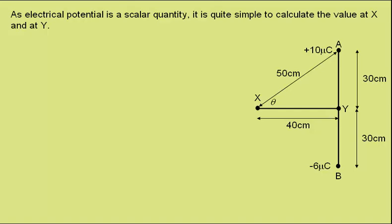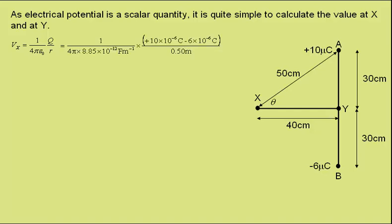As electrical potential is a scalar quantity, it's quite simple to calculate the value at X and at Y. The formula for electrical potential is 1 over 4 pi epsilon-zero, times q over R. At X, we have the charge at A, and the charge at B being negative will take away from this. The separation R for both is 0.5 metres. This gives a potential at X of 7.2 times 10 to the 4 volts.